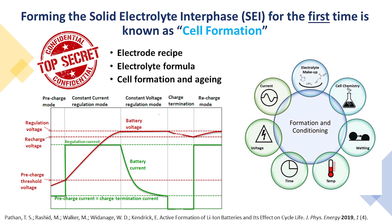This is how a basic charge profile looks for the first formation cycle. We apply a constant current up to a predefined state of charge or voltage, and then switch to constant voltage where the current decays exponentially. Once it reaches the limiting current we stop charging. This testing might be done at different temperatures to improve wetting of the electrodes, along with sophisticated charging algorithms and multiple steps, which makes formation more complicated.